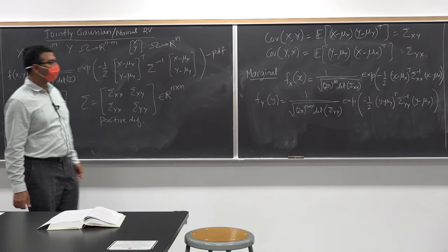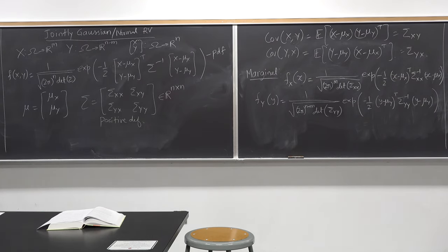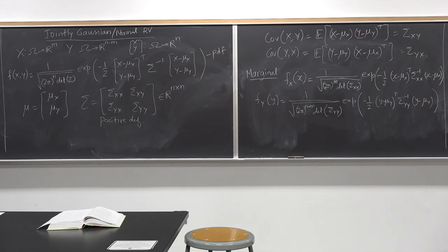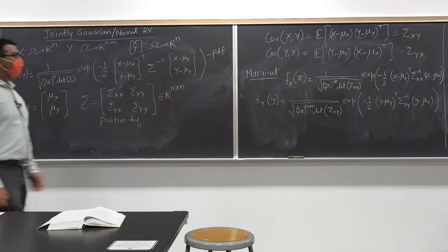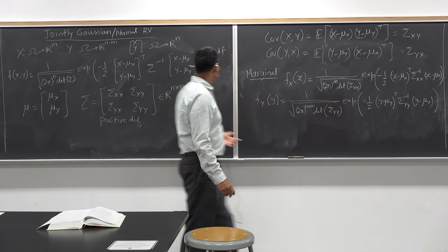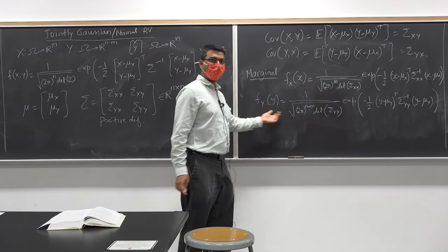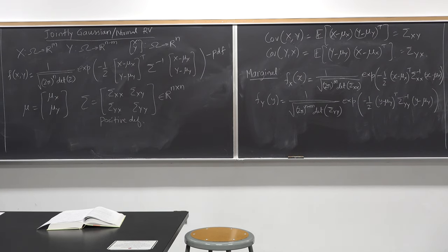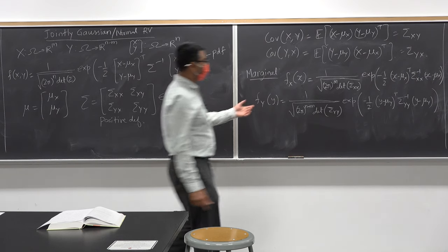How do you get the marginal distribution? You use the integral formula mentioned in a previous class. Of course, taking the integral of such a complicated expression is a nightmare, so I don't expect you to do it at home. The way to get the marginal is by integrating the joint PDF with respect to y to get the density on x, or integrating with respect to x to get the density on y.